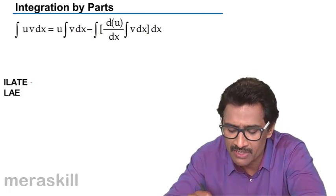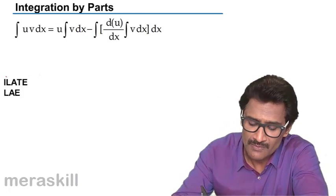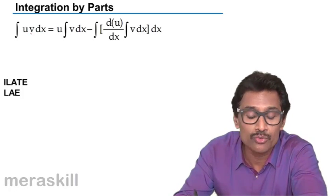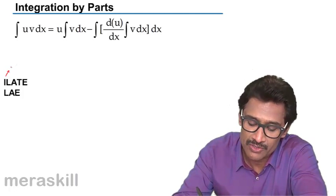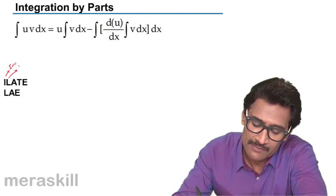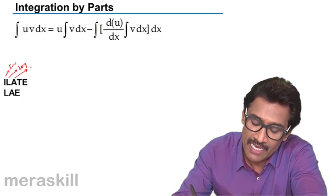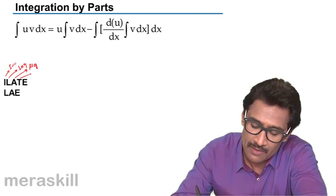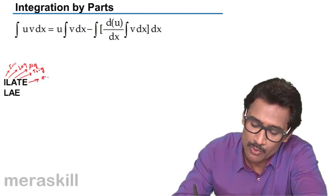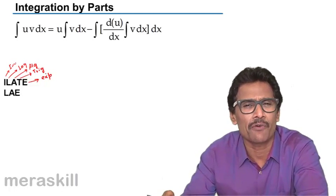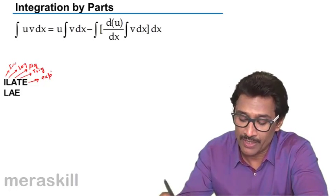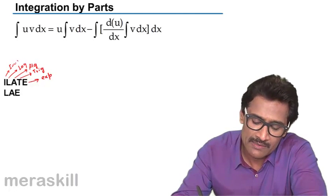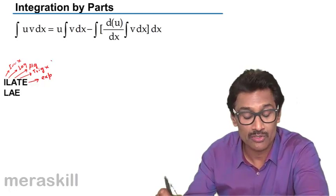To decide what to take as u, we use the ILATE rule. I stands for inverse functions, L for logarithmic functions, A for algebraic expressions, T for trigonometric functions, and E for exponential functions such as a raised to x. For our purposes, inverse and trigonometric are not generally relevant, so we focus on L, A, and E.